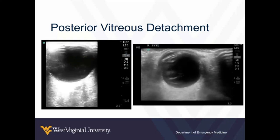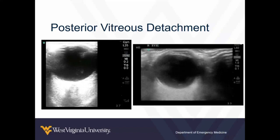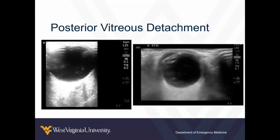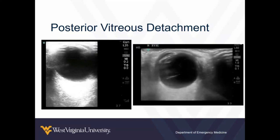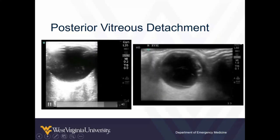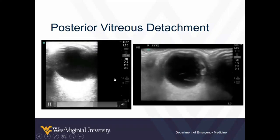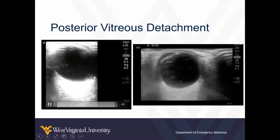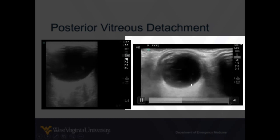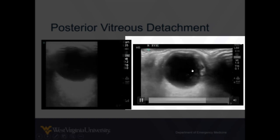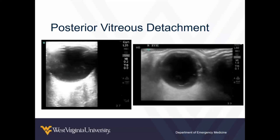The other super common thing that causes painless vision loss — as opposed to the foreign body, which is probably painful — is posterior vitreous detachment. This is probably the most common cause of floaters and painless vision changes that we see. You can see what this looks like — it's not as obvious as retinal detachment. But to the untrained eye, this could look very similar. You see this white stuff floating around as they move, floating around in the back of their eyeball. It looks kind of like sheets. But there are some significant differences between this and retinal detachment.